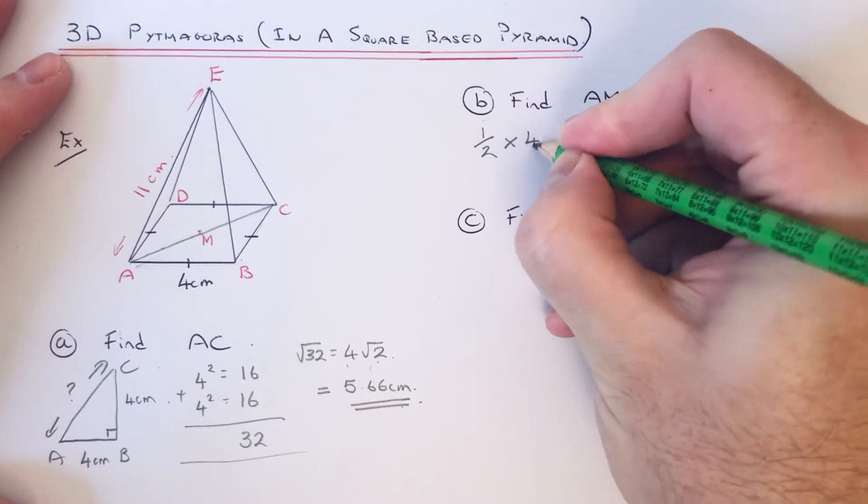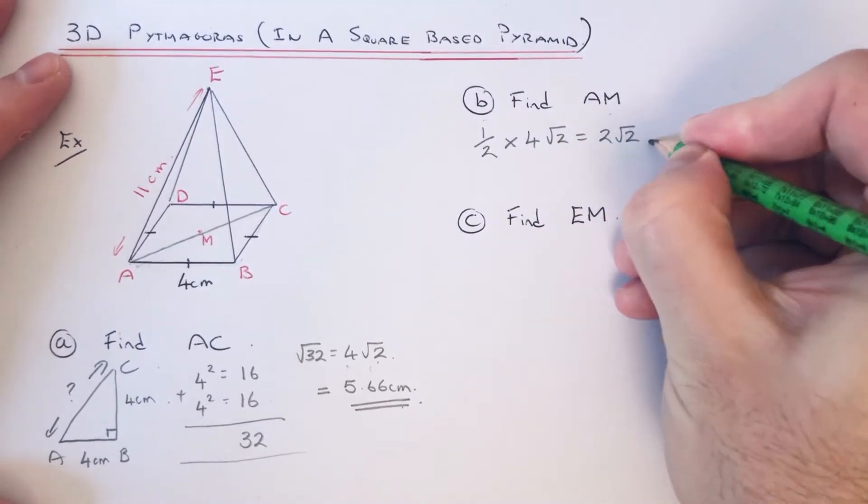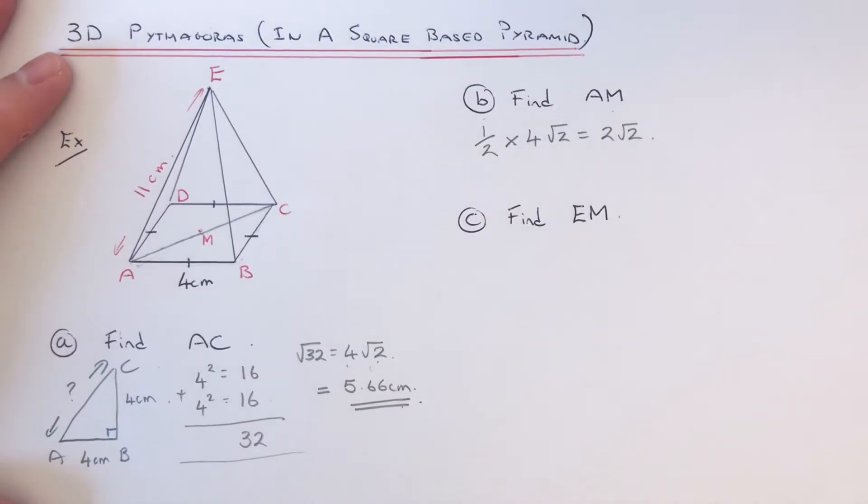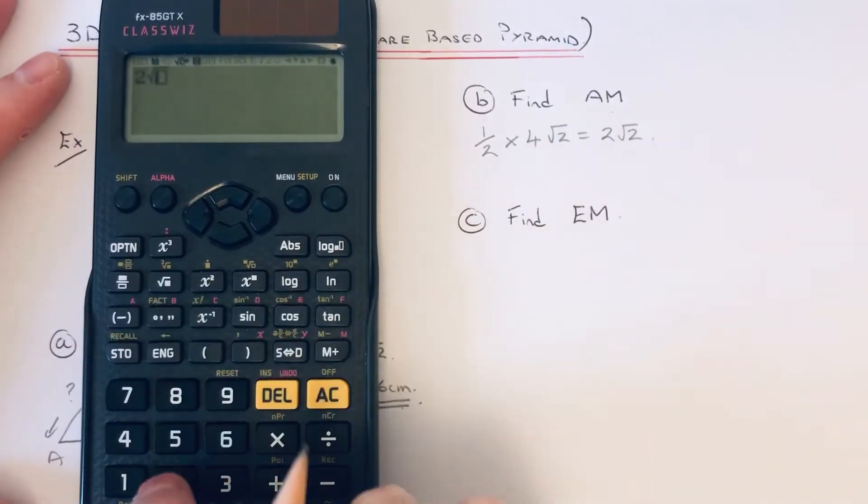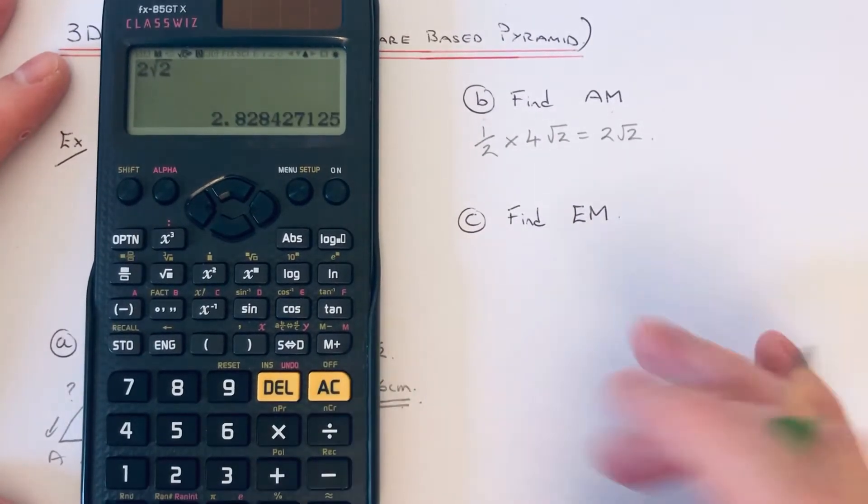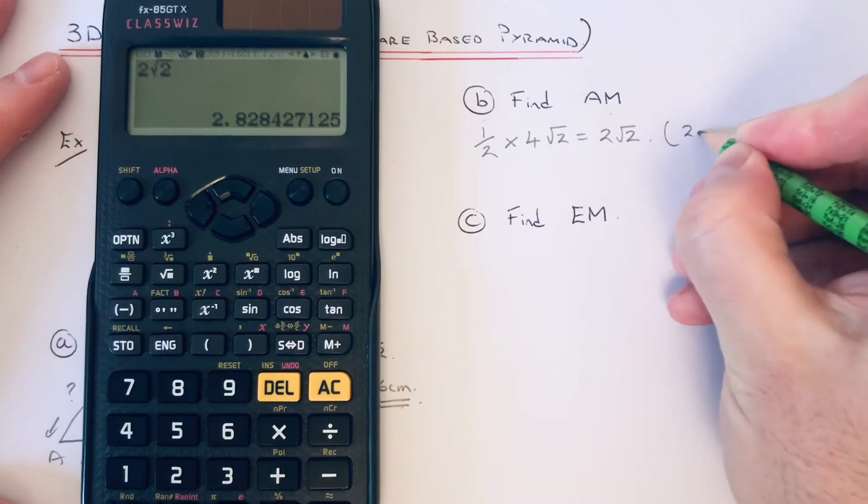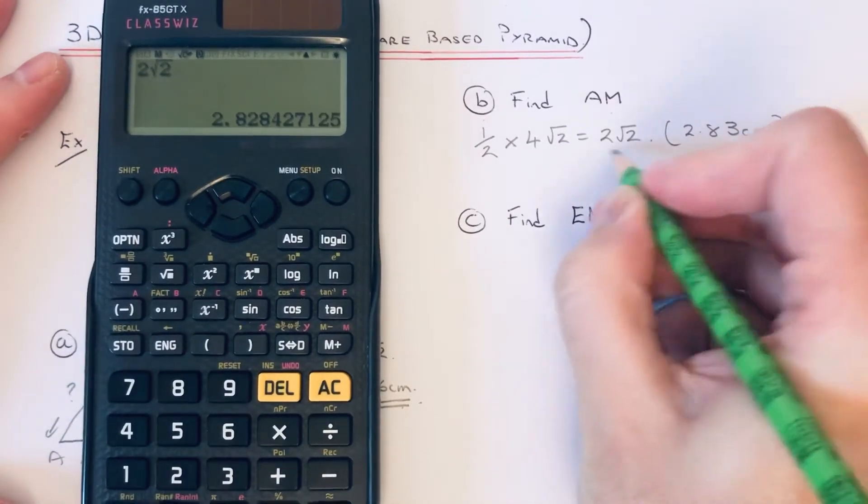So I'm gonna half the surd answer because it's much easier to do. So half times 4√2 will give us 2√2. If you want that as a decimal, just type it in on your calculator—it would be 2.83. So it's best to work with the surds if you can because it makes the next answer more accurate.